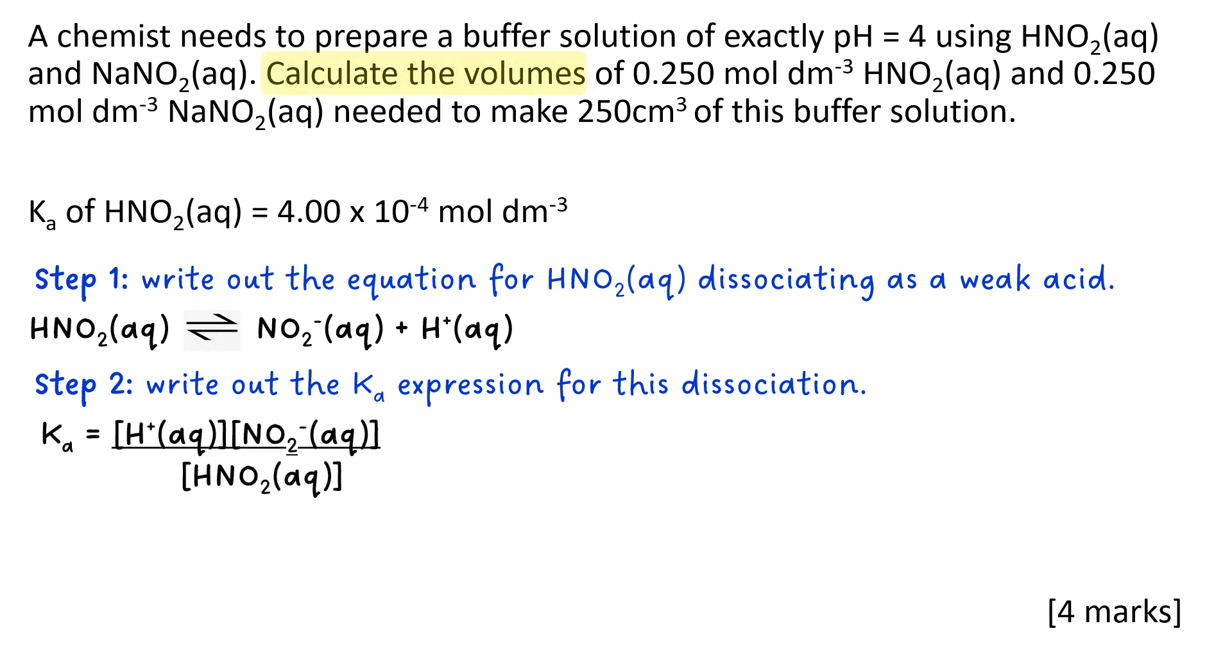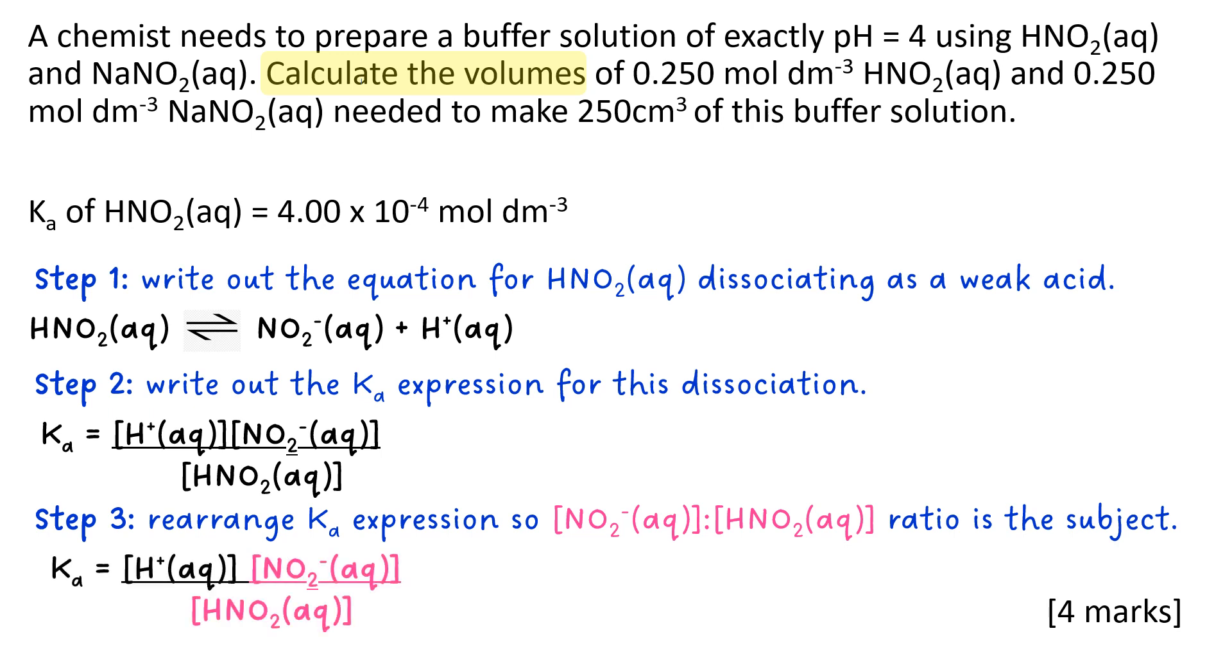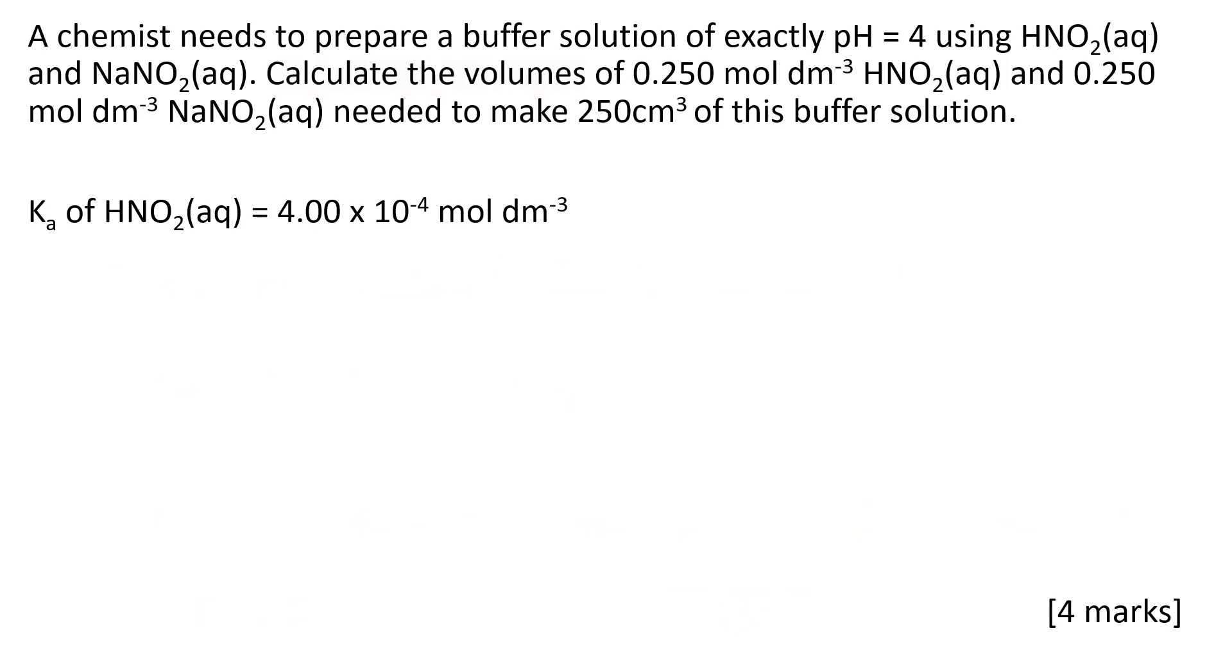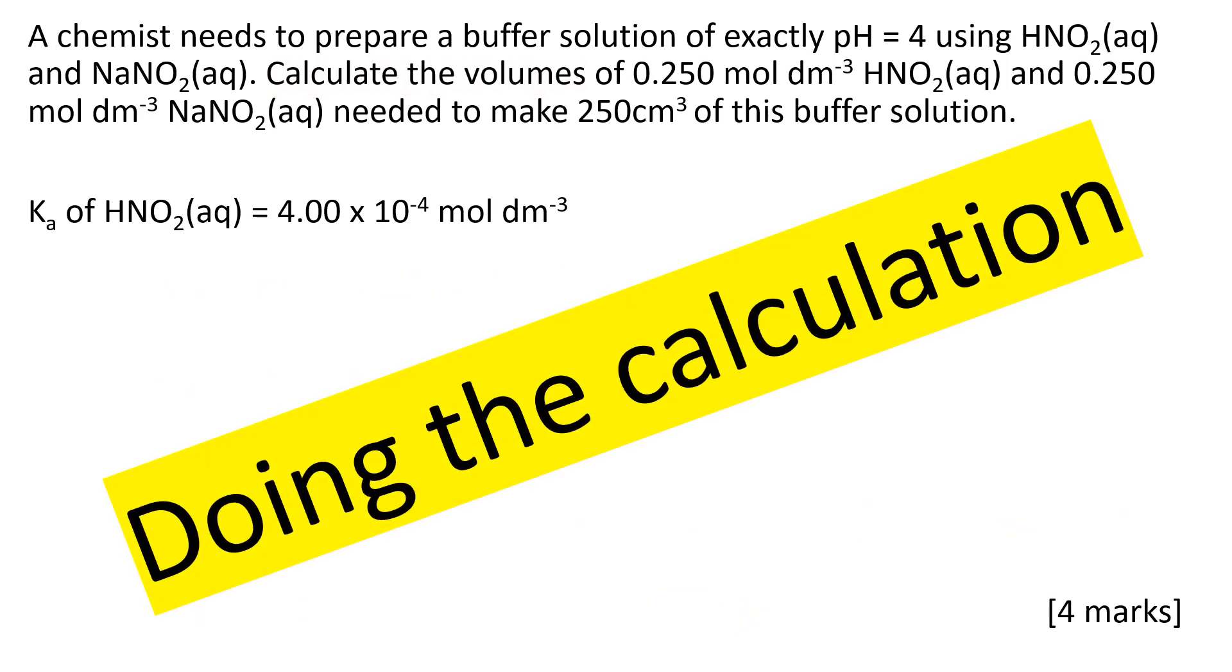So because they want the volumes, that must mean there's two concentrations you're looking for. So it looks to me like it's a ratio question. So you can rearrange the Ka expression so the NO₂⁻ ion concentration to HNO₂ concentration is the subject. So that's what it looks like as a Ka expression. And this is what it looks like as a rearrangement so that you've got your ratio as a subject.